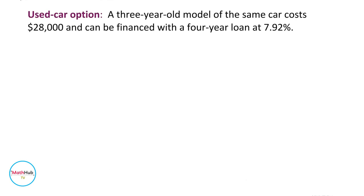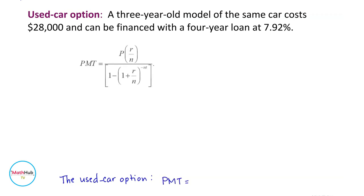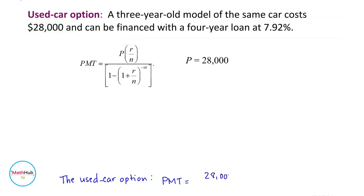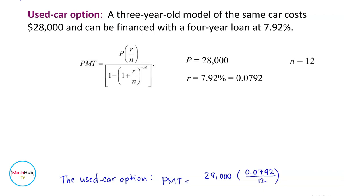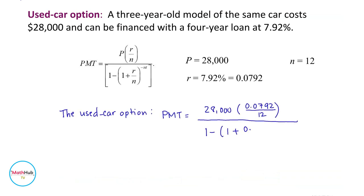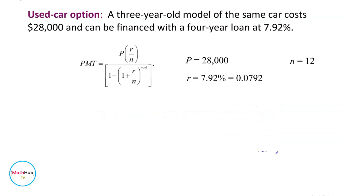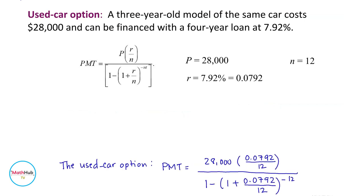Now let's compute for the used car option using the same formula. In this case, P equals $28,000. So $28,000 times the rate 7.92%, which in decimal form is 0.0792, divided by 12. N equals 12 for monthly payments. The denominator is 1 minus 1 plus 0.0792 over 12, raised to negative 12 times T. T equals 4 since this is also a four-year loan.